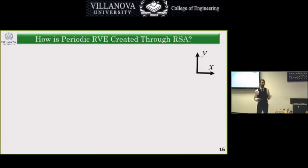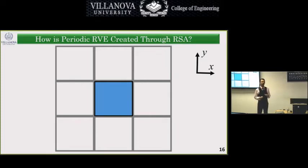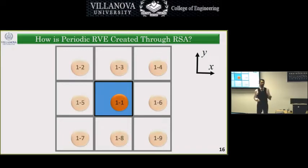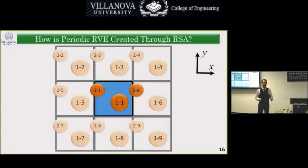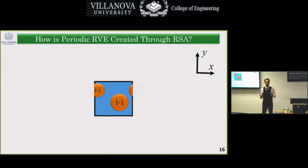These RVEs are created using the RSA algorithm — random sequential adsorption. Imagine nine adjacent squares on a plane with the center square as the RVE. We start by adding one inclusion to the RVE and assume sister particles in adjacent squares. Additional non-overlapping inclusions are added, crossing walls if needed, with only those in contact with the RVE plotted. Cutting along the boundary yields a periodic microstructure.